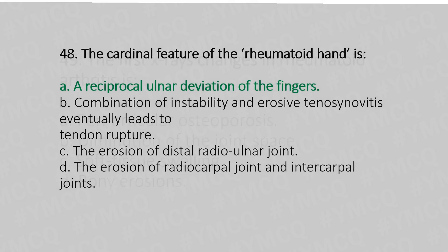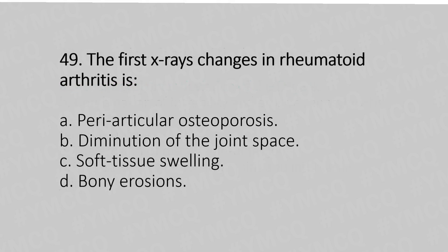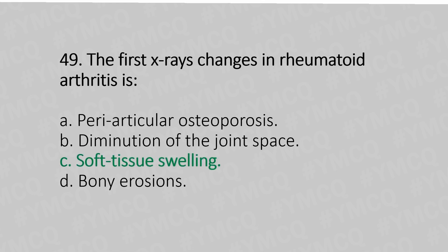Now let's move to question number 49. The X-ray changes in rheumatoid arthritis are: option A, periarticular osteoporosis; option B, diminution of the joint space; option C, soft tissue swelling; option D, bony erosion. And the answer is option C, soft tissue swelling.